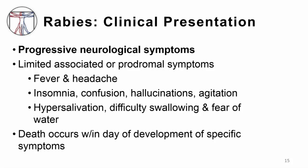The clinical presentation of rabies is characterized by progressive neurologic symptoms. First, patients develop fever, headache, and general weakness or discomfort. Then, as the disease progresses, more specific symptoms occur — including insomnia, anxiety, confusion, slight or partial paralysis, excitation, hallucinations, agitation, hypersalivation, difficulty swallowing, and fear of water. Death usually occurs within days of the onset of these latter symptoms.